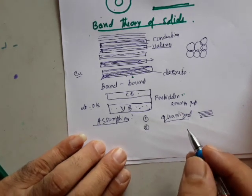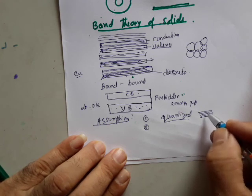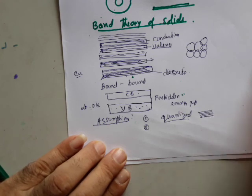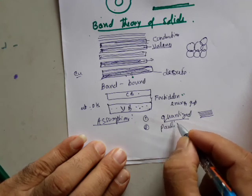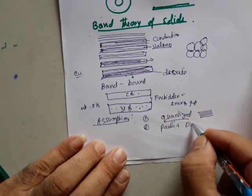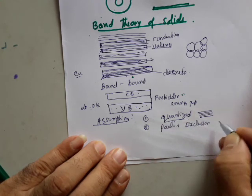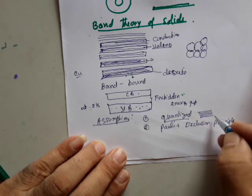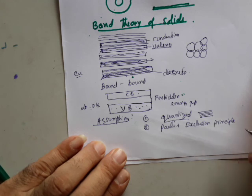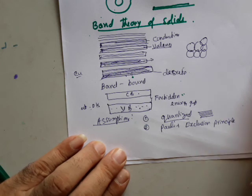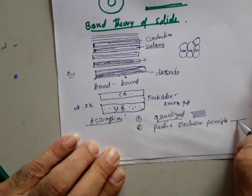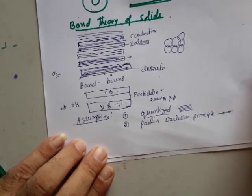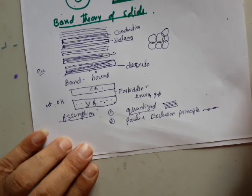The second assumption is how we fill electrons in each energy level. There is a principle called Pauli's exclusion principle, which states that no two electrons in an energy level are identical. Electrons may be identical in other states, but at least in terms of their spin quantum state they are different. This means every energy level can occupy a maximum of two electrons.